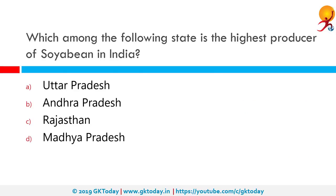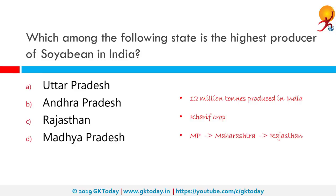Which among the following states is the highest producer of soybean in India? With 12 million tons of production, soybean is one of the fastest growing crops in India. Soybean is grown as a Kharif crop, and the top three largest producers are Madhya Pradesh, Maharashtra and Rajasthan. Madhya Pradesh and Maharashtra have 45% and 40% share in production respectively. The correct answer is Madhya Pradesh.